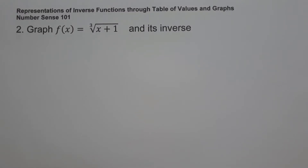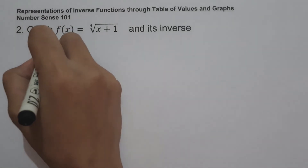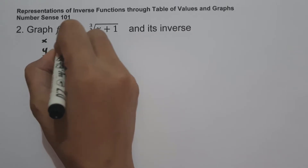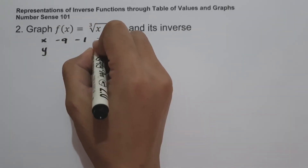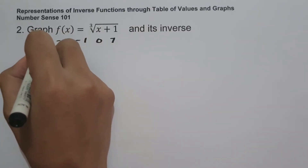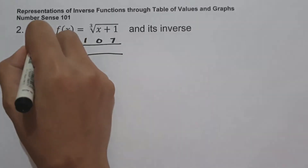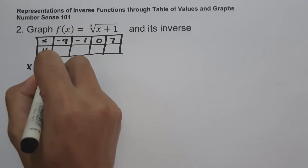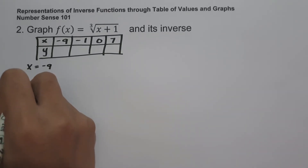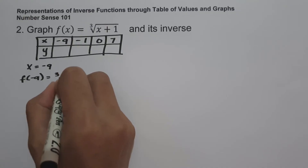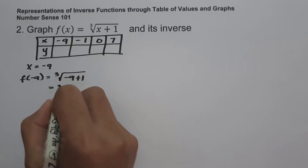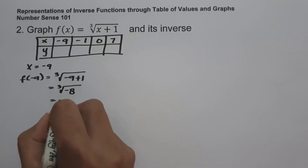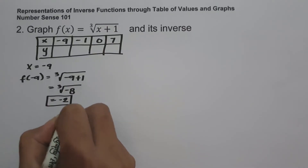On example number two, graph f of x equals the cube root of x plus 1 and its inverse. To graph the given function, let us construct a table of values with x and y. Let's say the values of x are negative 9, negative 1, 0, and 7. For x equals negative 9: f of negative 9 equals the cube root of negative 9 plus 1. Negative 9 plus 1 is negative 8, and the cube root of negative 8 is negative 2.